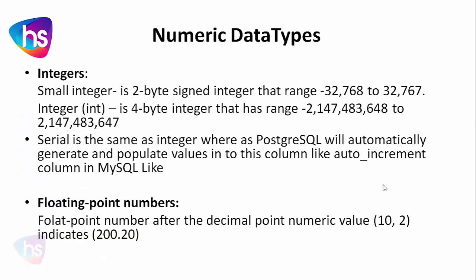Now, numeric data types — specifically integers. There are two types: SMALLINT and INTEGER. SMALLINT is a two-byte signed integer with a range of negative 32,768 to positive 32,767. A number will only be accepted if it falls within that range for a column defined as SMALLINT.